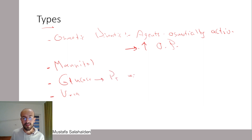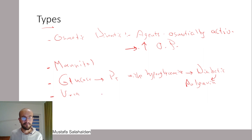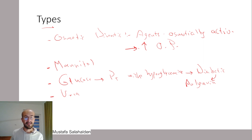We also have materials that cause osmotic diuresis inside the human body, such as glucose and urea. Glucose causes osmotic diuresis in patients with hyperglycemia — this is classic in people who have diabetes, because diabetic patients usually have polyuria which is caused by osmotic diuresis from hyperglycemia. Urea is another example of a material that causes osmotic diuresis inside the human body.